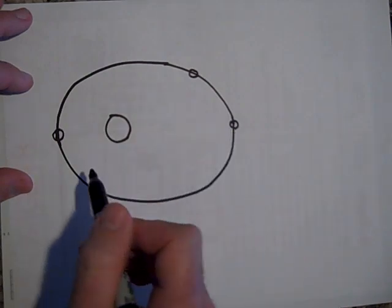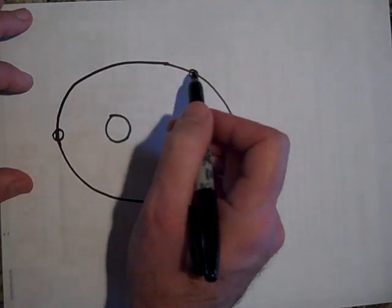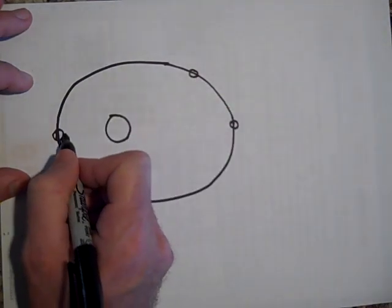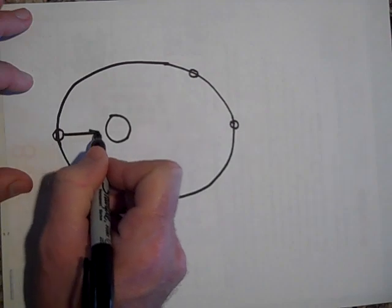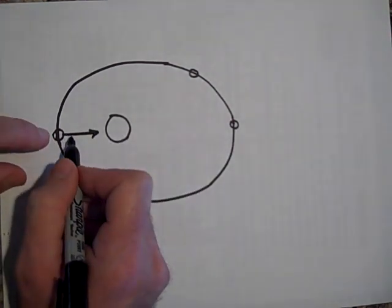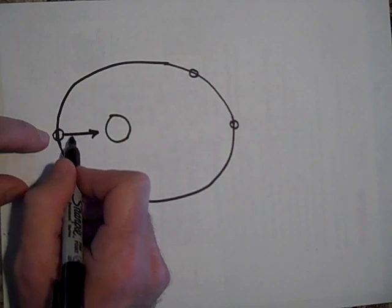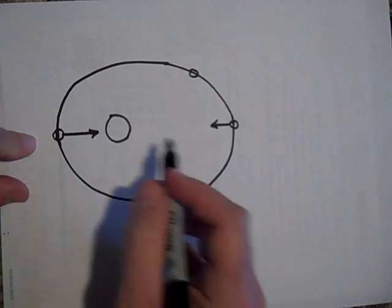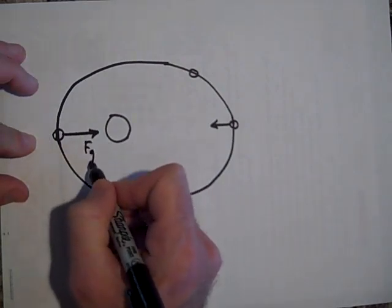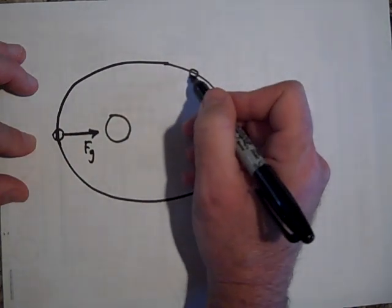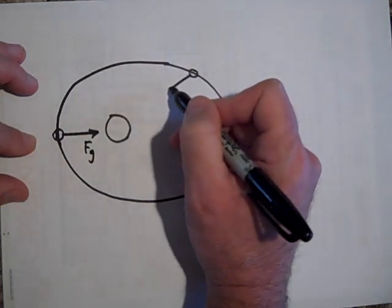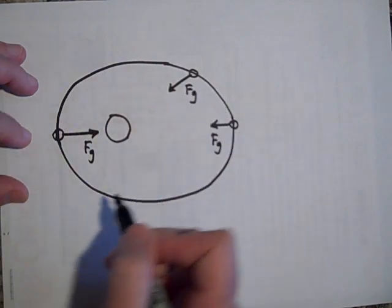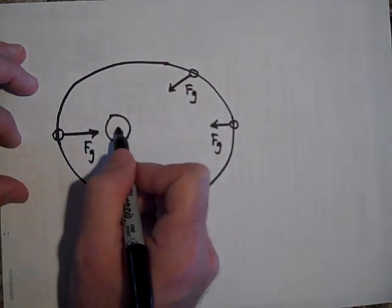I'm going to draw the forces on the planet, the satellite in different spots. So this is going to be the biggest force because it's the closest. So it's actually got the biggest acceleration right here. The force is smaller here. So I'll make it smaller. That's the force of gravity, force of gravity smaller. And it's some intermediate distance here. But if you look at the way I've drawn this, these are all pointing in toward the center of the sun.